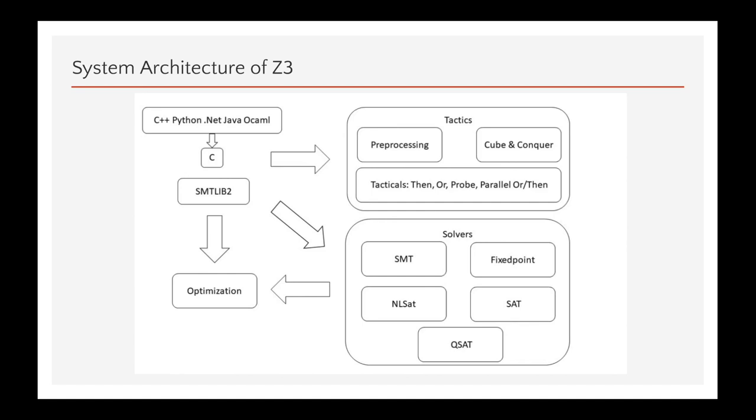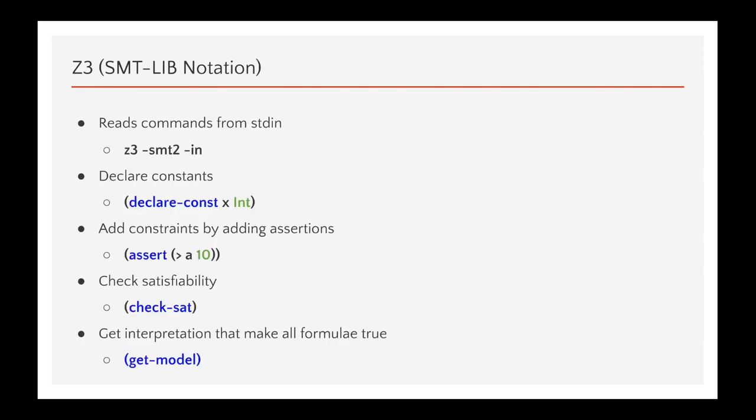So, this figure shows the system architecture of Z3. We can interact with Z3 via SMT library scripts or by using API calls from high-level programming languages such as C++, Python which basically use a C-based API. Tactics provide the means for pre-processing the input and simplifying it. Solvers essentially maintain a set of formulas and support satisfiability checking. These are the kind of solvers that Z3 supports and we'll talk about some of them later. For some applications, it is useful to retrieve models that are also optimal and Z3 supports objective functions which use this optimization module.